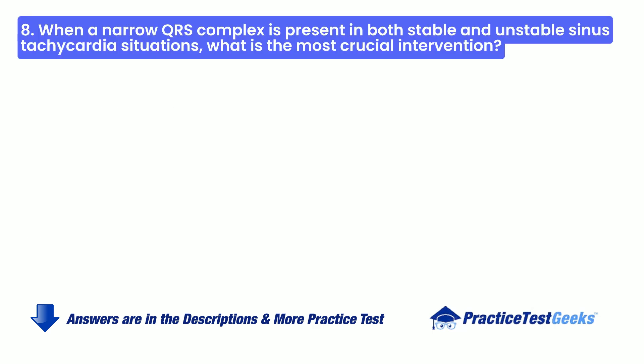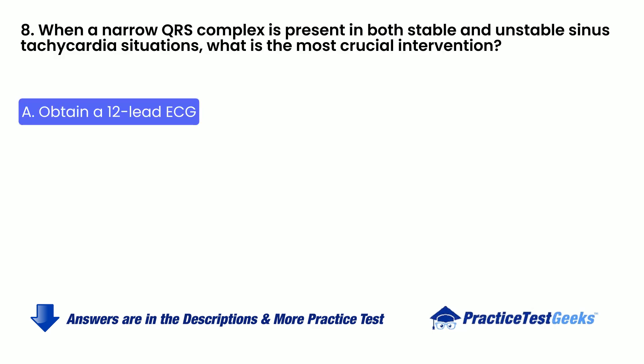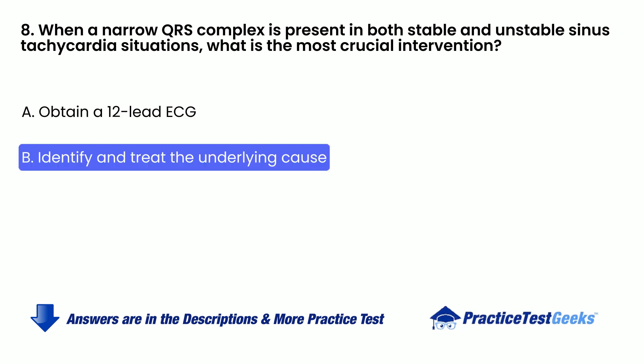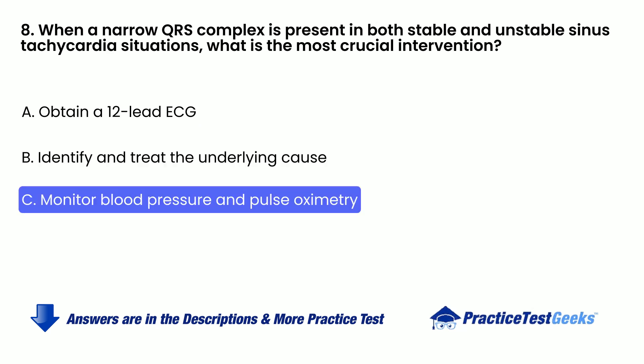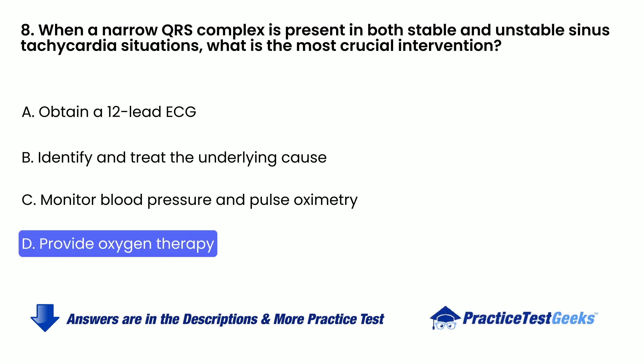When a narrow QRS complex is present in both stable and unstable sinus tachycardia situations, what is the most crucial intervention? A. Obtain a 12-lead ECG. B. Identify and treat the underlying cause. C. Monitor blood pressure and pulse oximetry. D. Provide oxygen therapy.